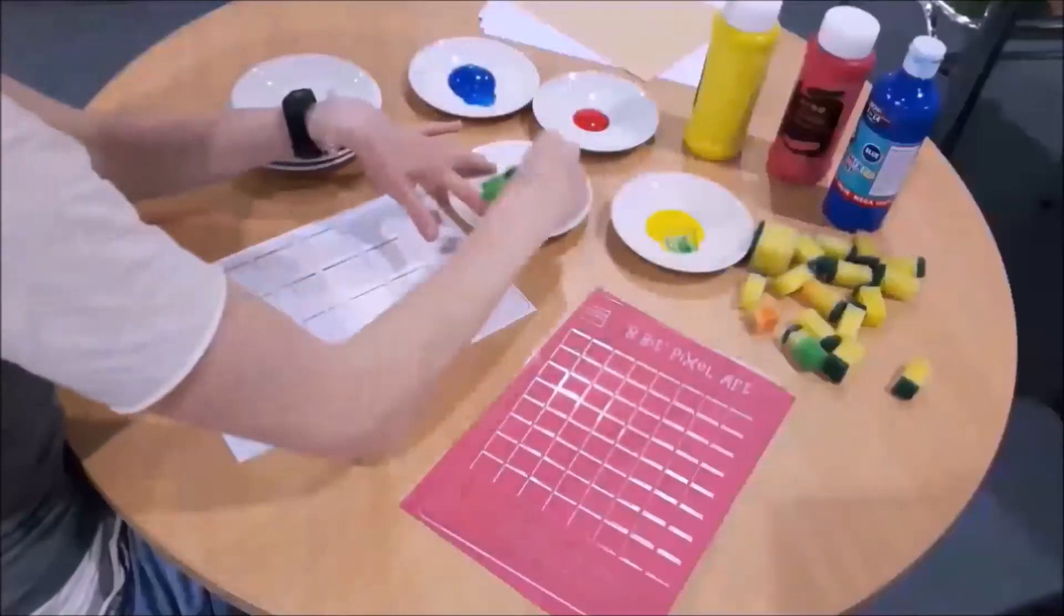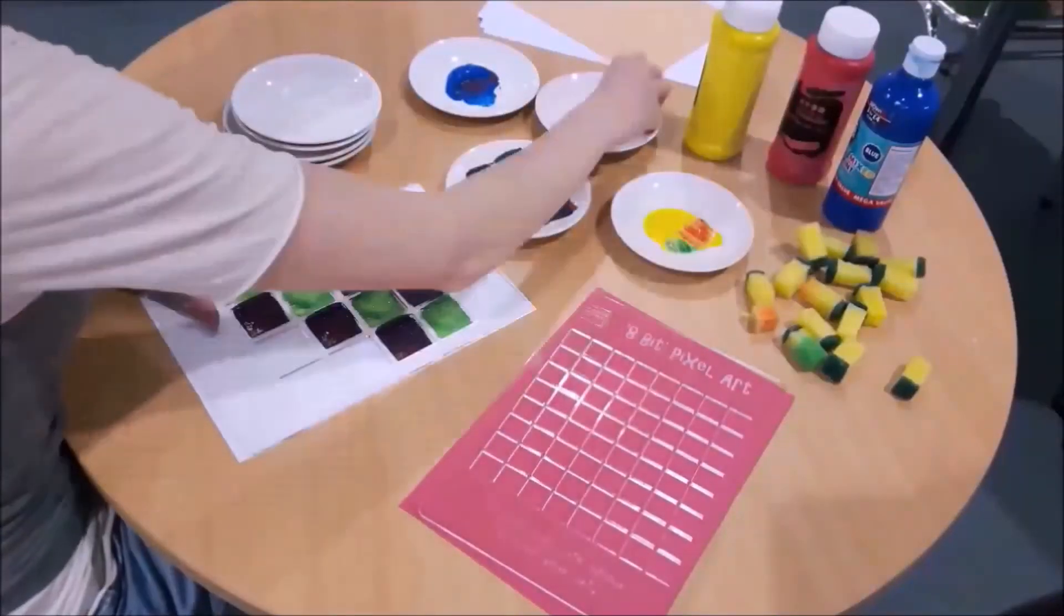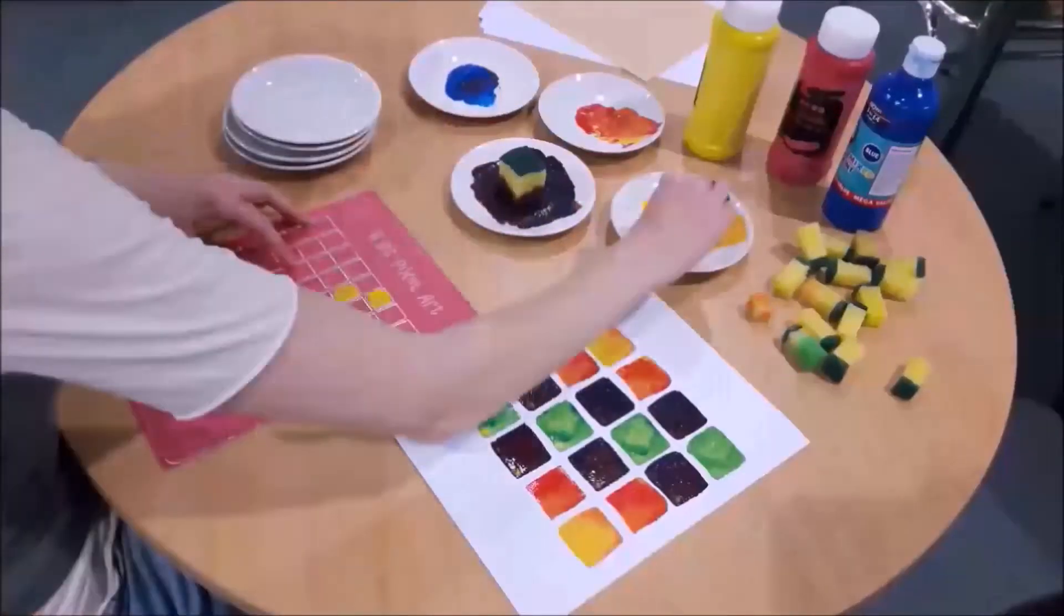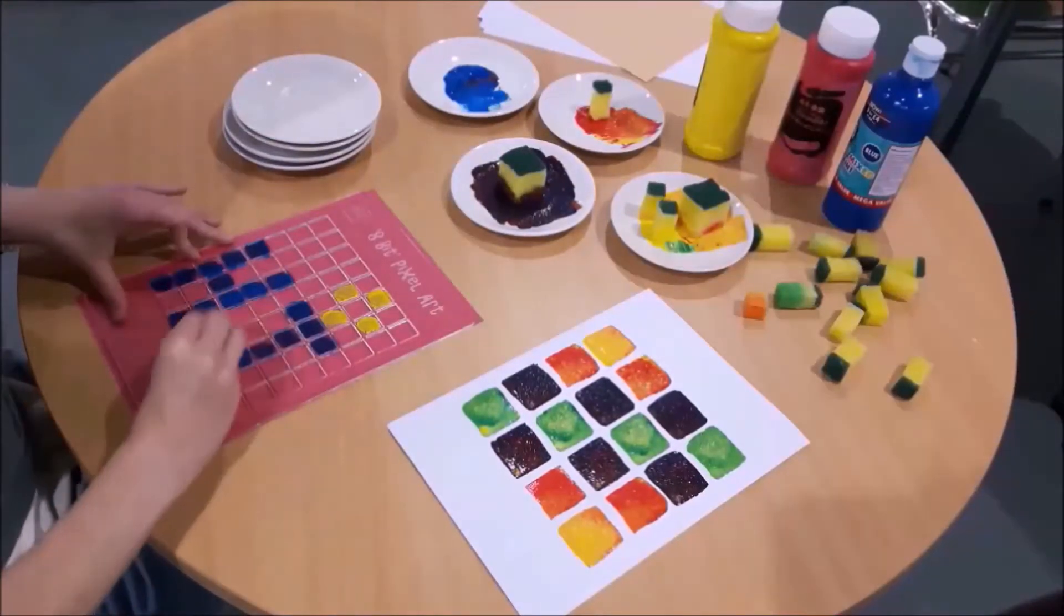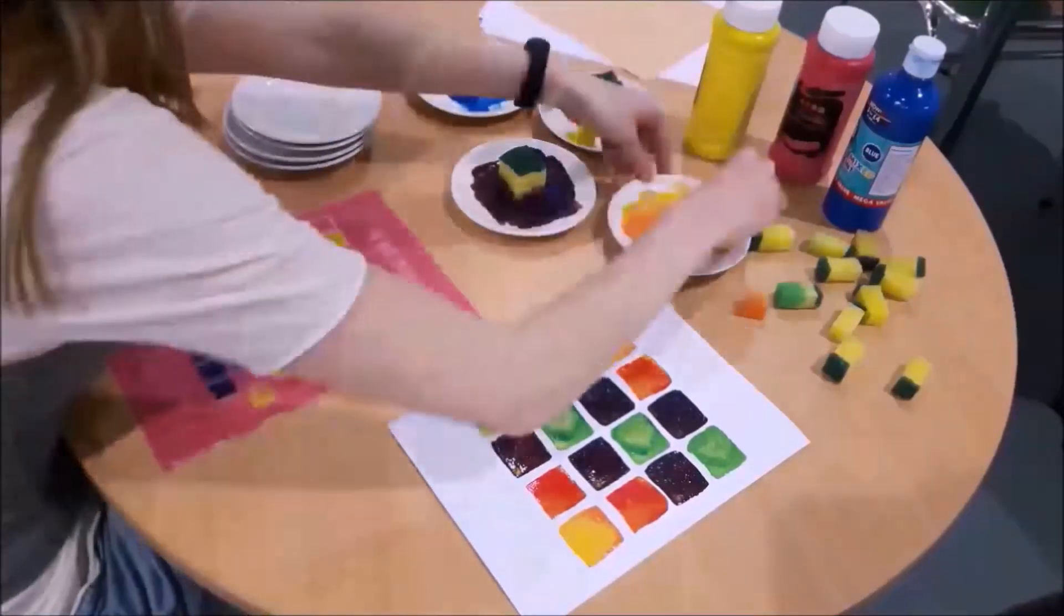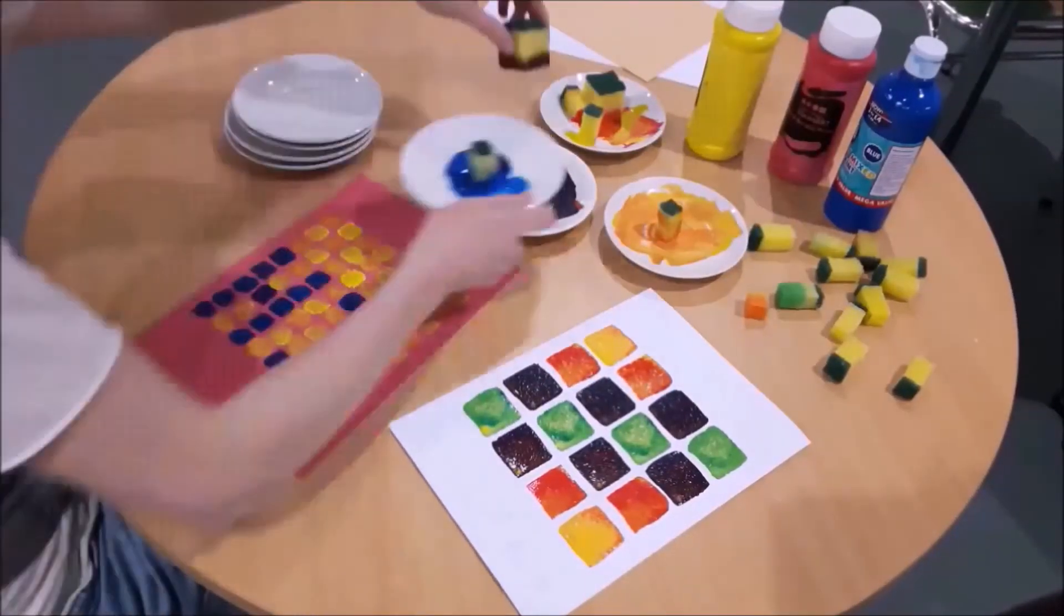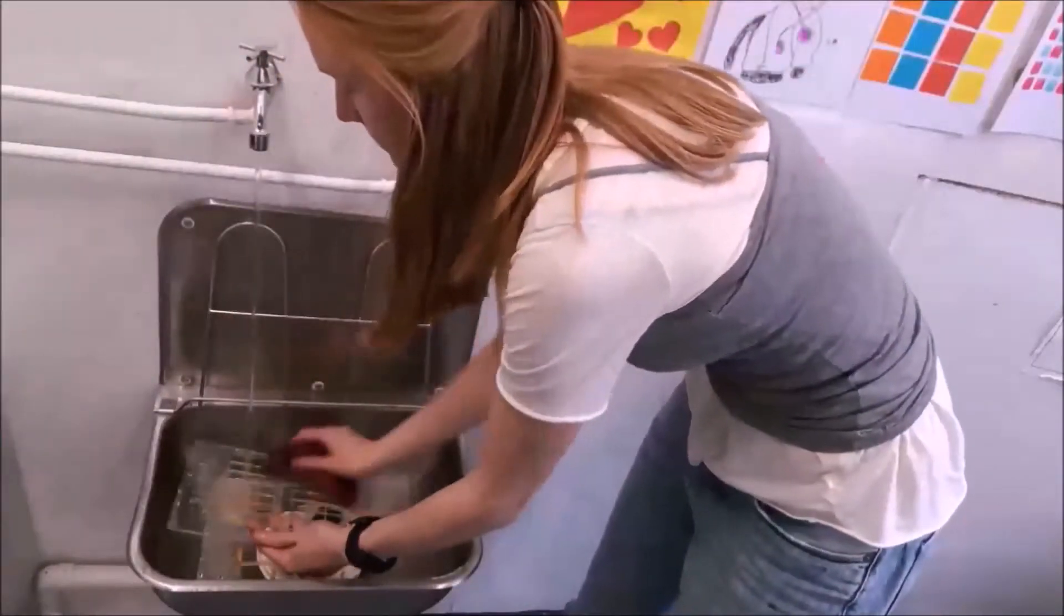So the first method I used for my pixel art was using paint and sponges. I used just a pattern for the 4-bit pixel art and then I wrote 'high' with the 8-bit pixel art and did a little yellow and orange pattern around the word high.